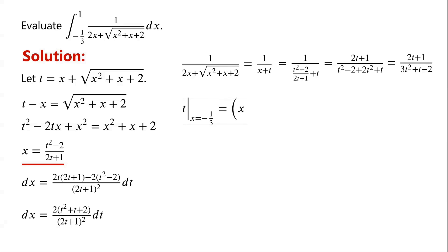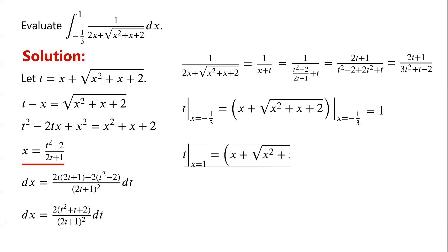When x equals negative one-third, t equals negative one-third plus the square root of (negative one-third) squared plus negative one-third plus 2, which equals negative one-third plus the square root of 16/9, which equals 1. When x equals 1, t equals 1 plus the square root of 1 squared plus 1 plus 2, which equals 1 plus the square root of 4, which equals 3.